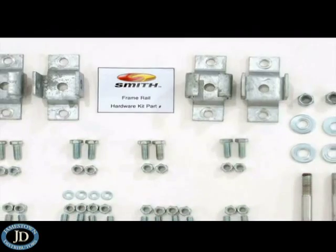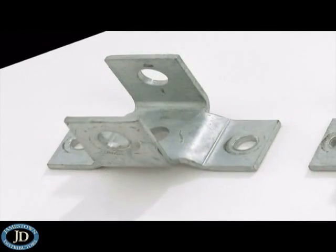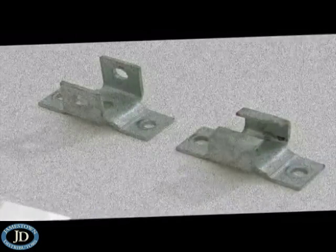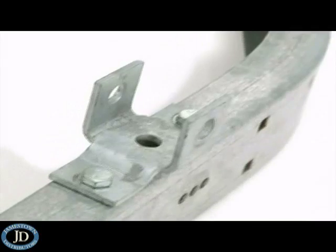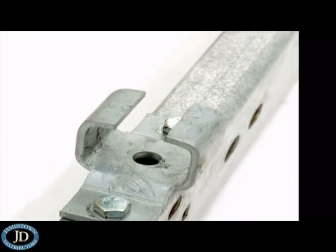We'll start by mounting the spring hanger brackets to the rail. The front has the two eyes, the rear is the slipper. Go ahead and attach those now. We'll bring the springs over a little later.